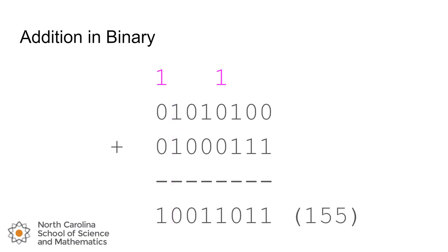And we get to the final result of 10011011, which is 155 in decimal. So that algorithm that we're used to using for our decimal representations works just as well in binary, and we get the same result.